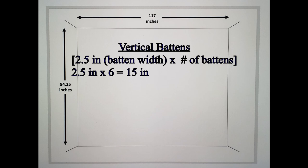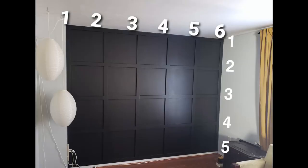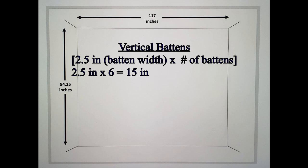To calculate how much space these battens would take up on my wall I multiplied the width of the batten which is two and a half inches by six because I knew I would have six vertical boards on my wall. That came up to 15 inches, meaning all the vertical battens would take up 15 inches of the entire space of my wall.